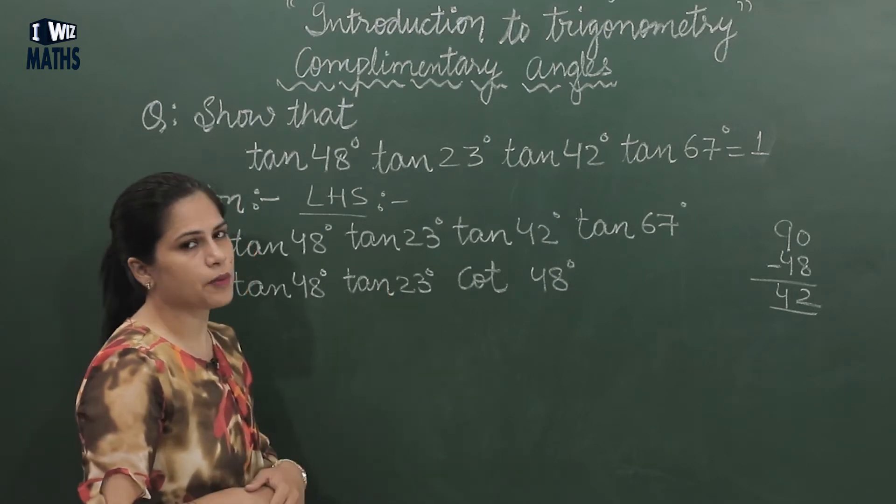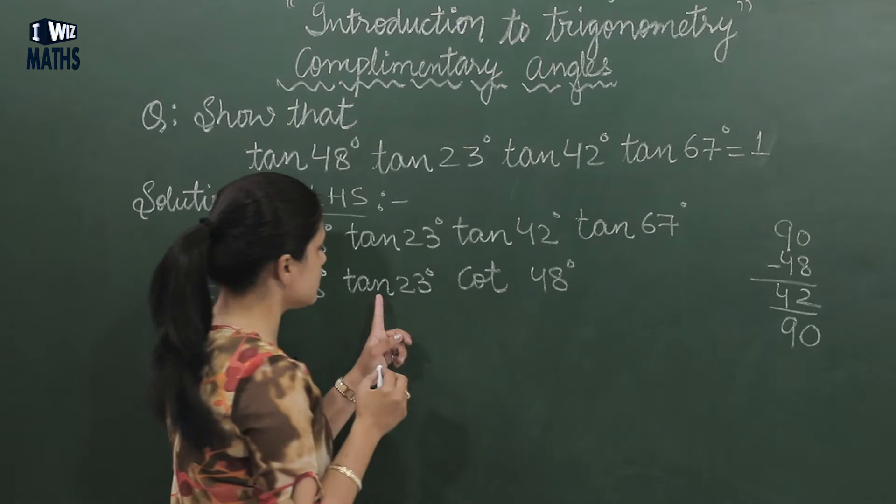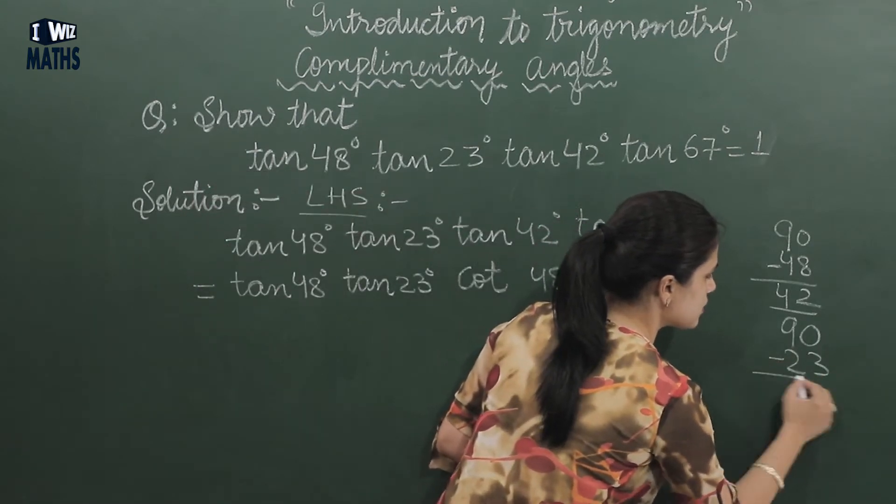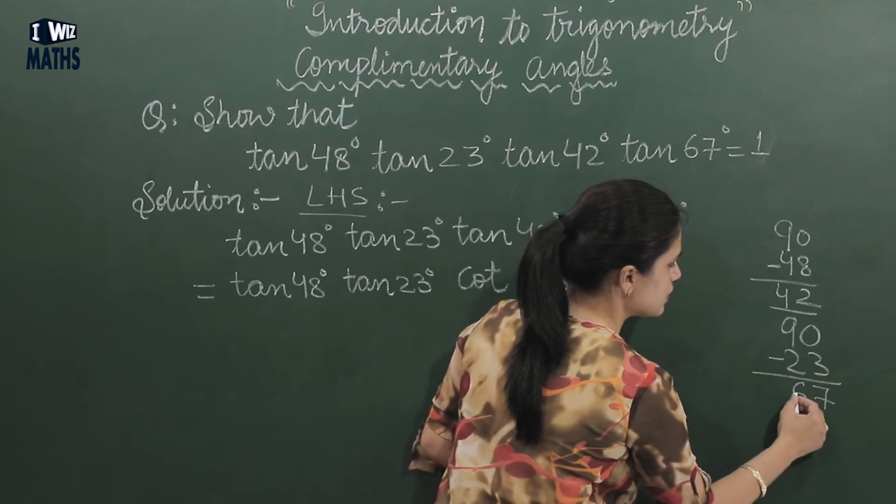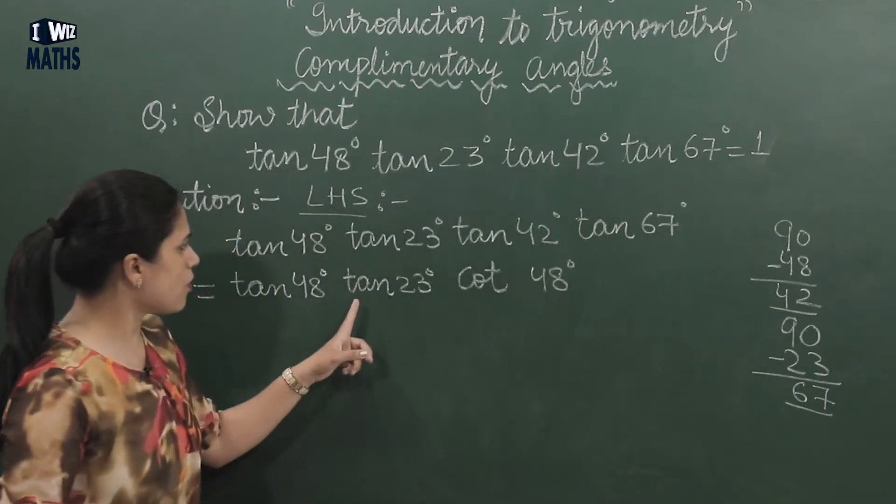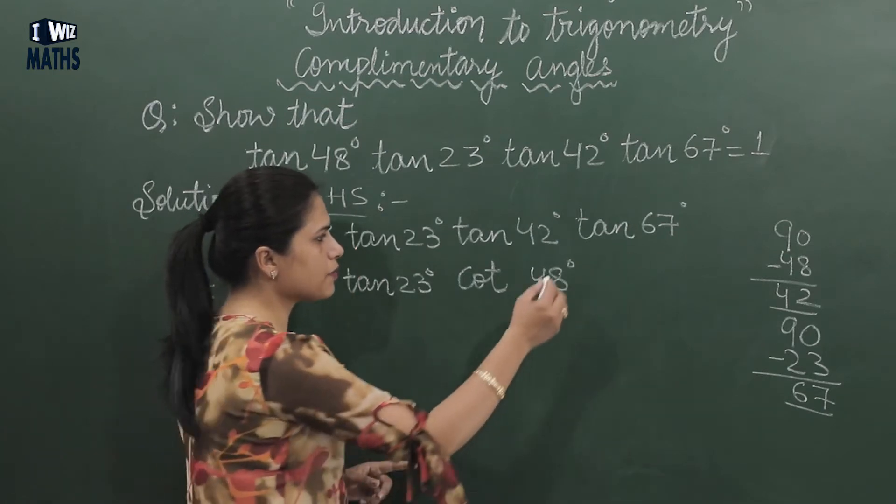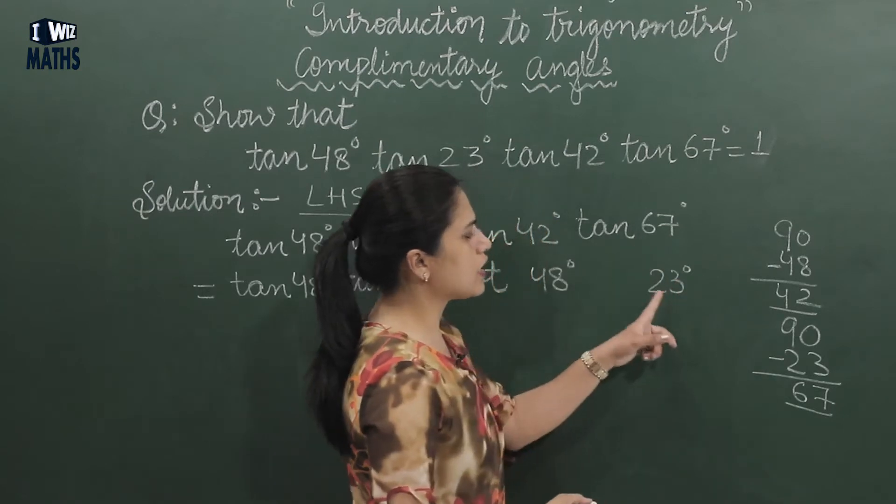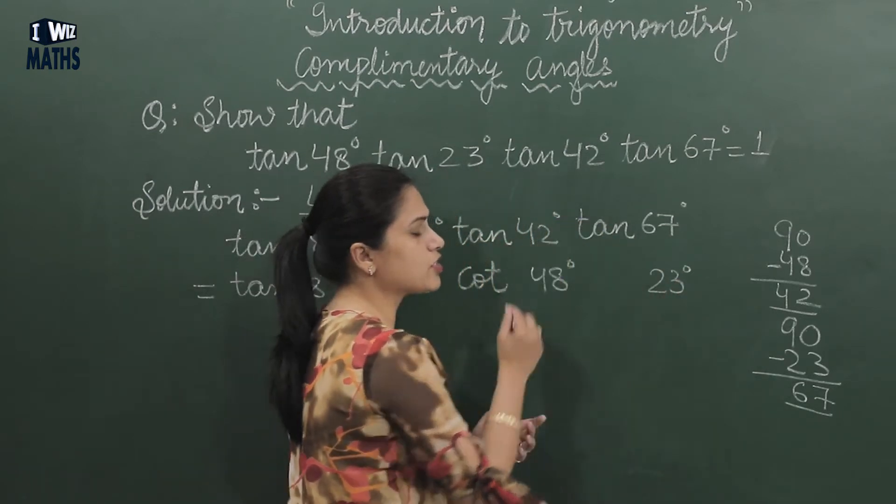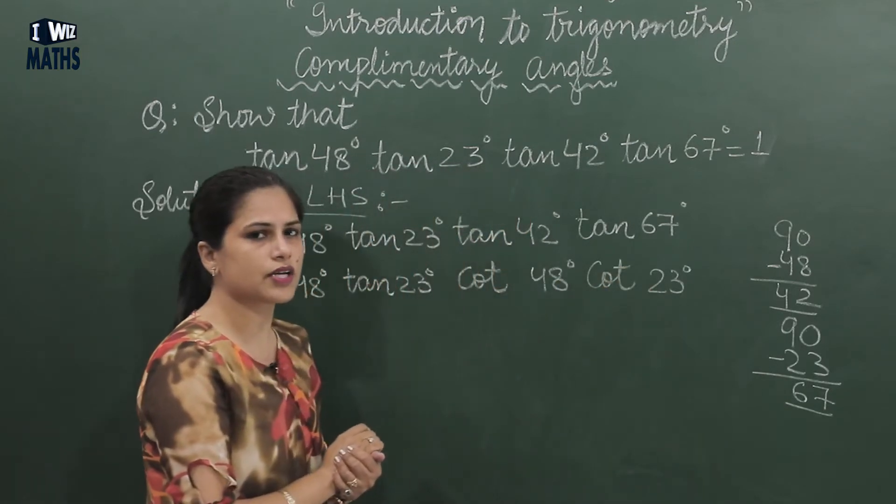Now tan 23 I've taken as it is, so now find 23's complementary. Again I go to rough: 90 minus 23, subtracting, 10 minus 3 is 7, 8 minus 2 is 6. So 23's complementary will be 67, and that is showing here. So if I write 23 in place of 67, meaning I've written its complementary angle, then in place of tangent what will be written? Its complementary will be written, which is cot 23°.